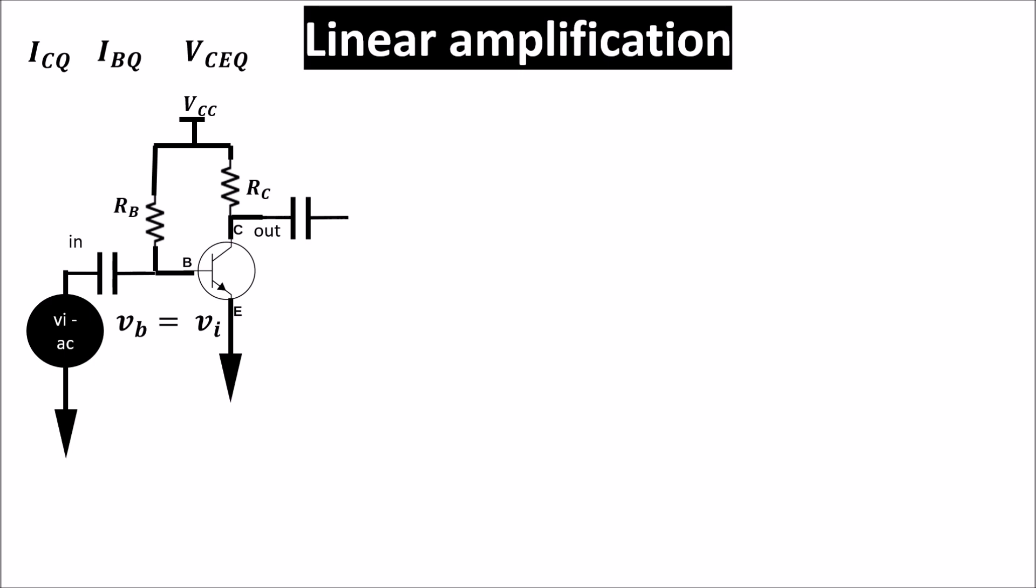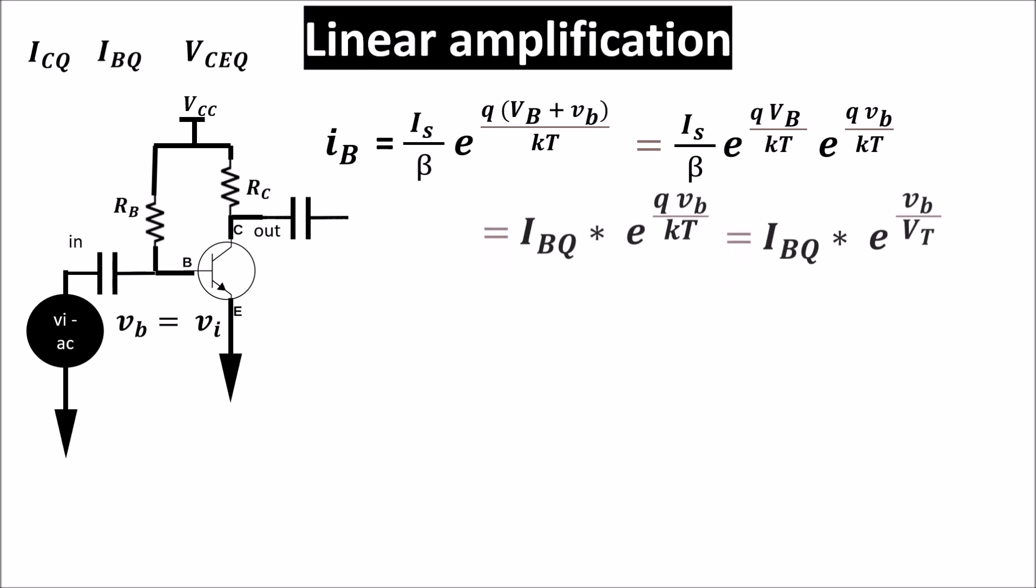So we can write that the base current now is this, where VB lowercase letters is my input signal VI. This equation can be written in this way and finally in this one, where VT is KT divided by Q and it is called thermal voltage.